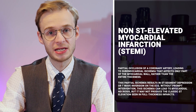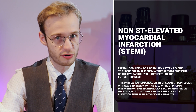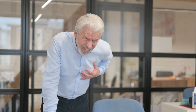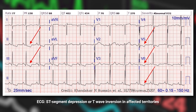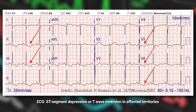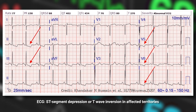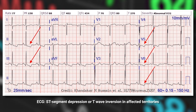Finally, NSTEMI — non-ST elevation myocardial infarction. Unlike STEMI, which involves complete occlusion, NSTEMI is due to partial occlusion of a coronary artery, leading to sub-endocardial ischaemia affecting only part of the myocardial wall. That partial ischaemia results in T-wave inversion or ST depression rather than ST elevation. Without intervention, this ischaemia can still lead to myocardial necrosis and scarring, but it may not produce the classic ST elevation of a full STEMI.